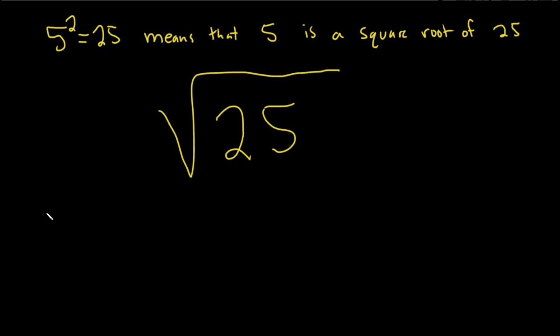However, if you take negative 5 and you square it, you also get 25. And so again, this means that negative 5 is a square root of 25.